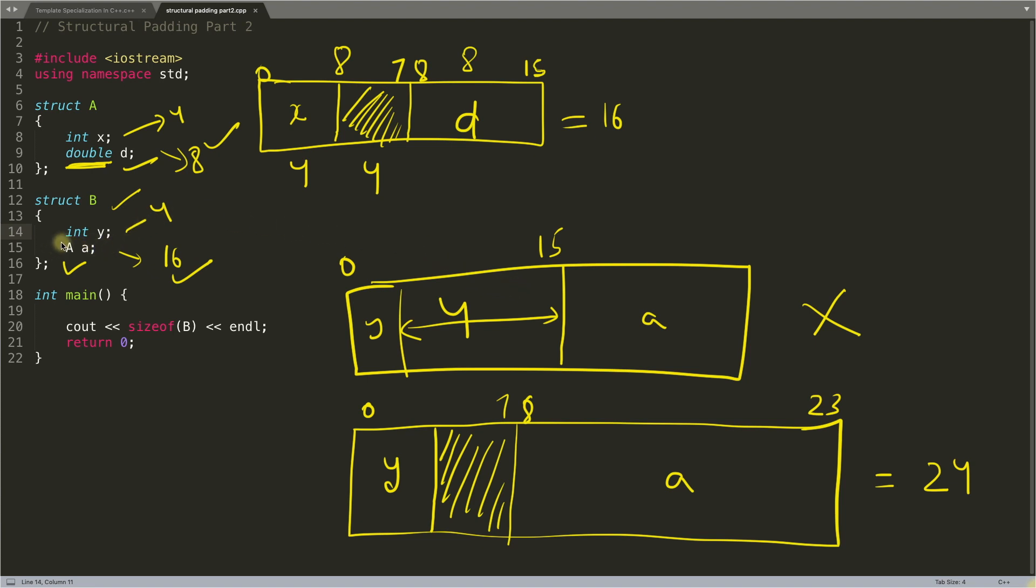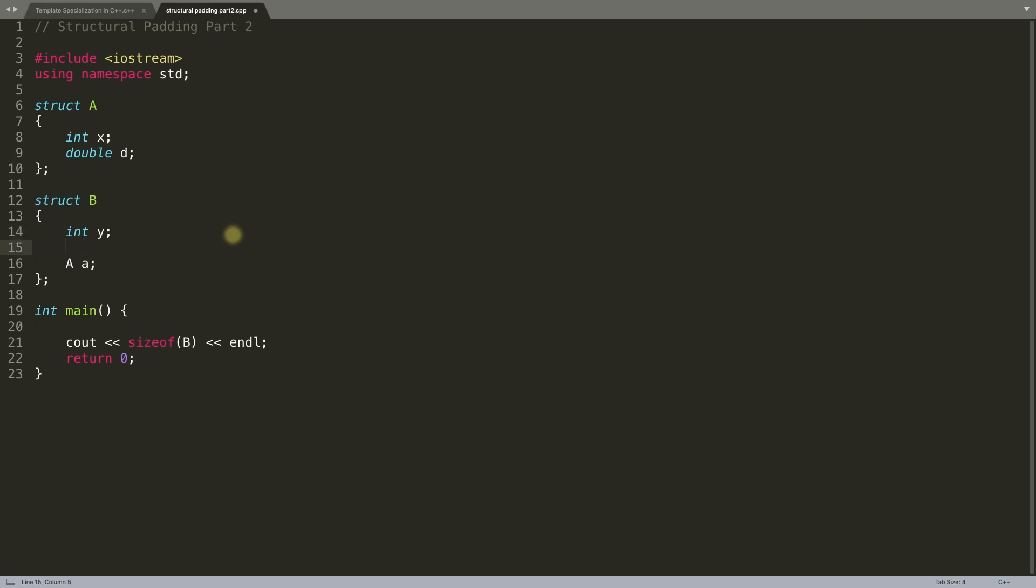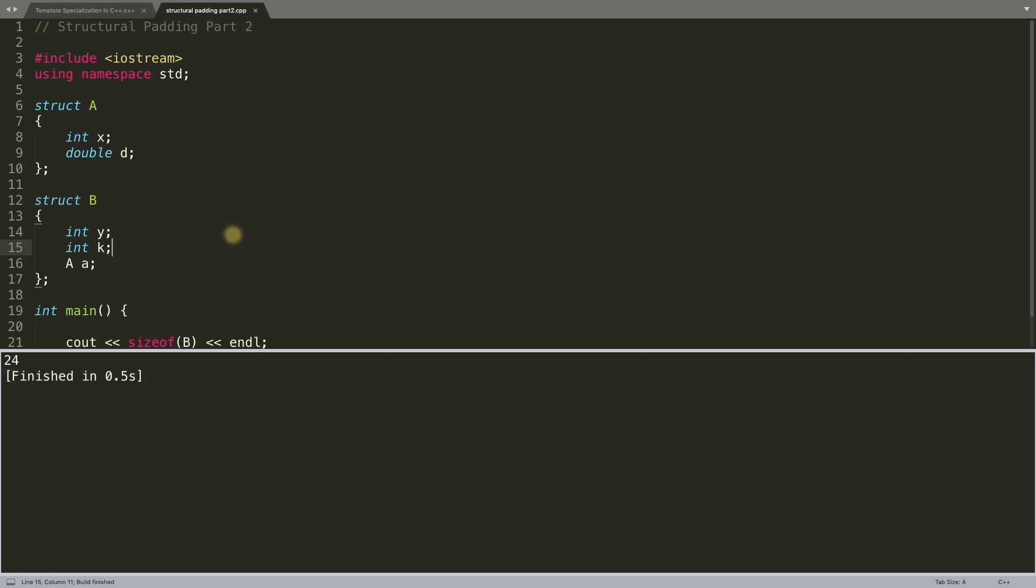You might think, what if we have another integer, let's suppose K? If there's some integer K after integer y, what should be the size of B? It should be 24 only, because as I said, it will try to open A and find the biggest element, which is 8 bytes. So it will first allocate 8 bytes and try to fit y inside that. Y will take only 4 bytes, and the remaining 4 bytes will go for K. So K will come here, and then A will come here. Now there's no wastage. If you want to see that, let's check. I'll place one integer K here and compile. See, it's still 24.